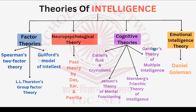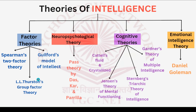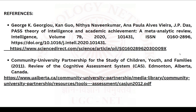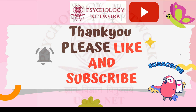Today we studied the PASS theory of intelligence, which is the neuropsychological theory. I have already covered factor theories, Cattell's fluid and crystallized intelligence, and Jensen's theory of mental functioning in my other videos. A few cognitive theories and emotional intelligence theories are still left. Follow and like this channel to stay updated. Go to my channel, look through the playlist, and you can find the factor theories and other cognitive theories of intelligence I've completed. Thank you so much for watching — please subscribe and like, because the information here is free, and subscribing helps you stay updated.